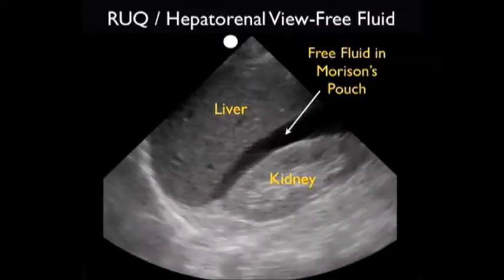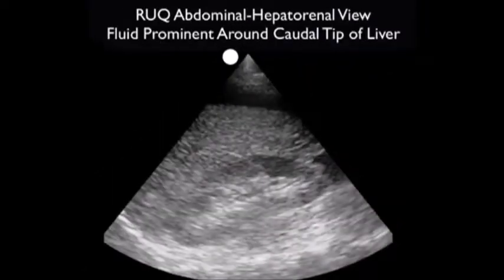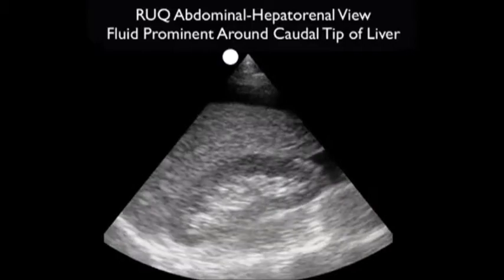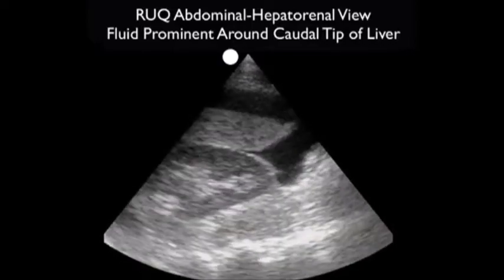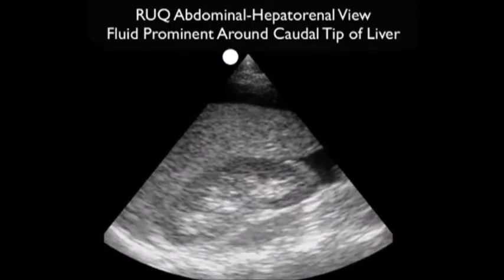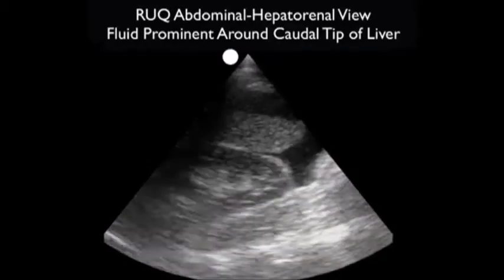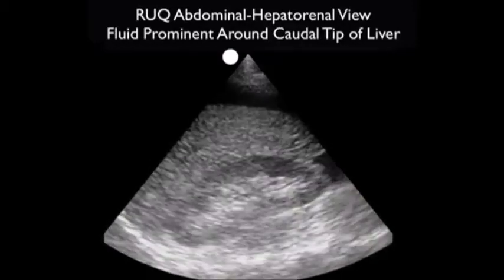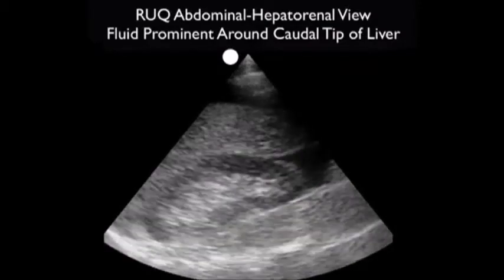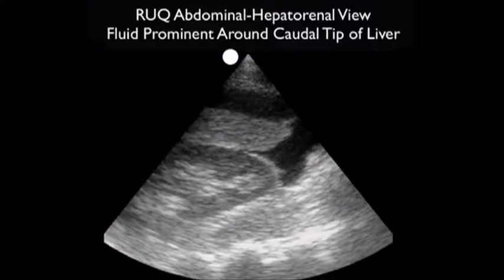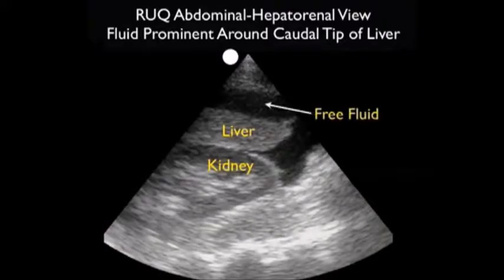Notice that it layers out in between that liver and kidney. To emphasize that a complete right upper quadrant view includes looking at the caudal tip of the liver, let's examine this video clip from another trauma patient. If we look at the hepatorenal interface, we fail to see any fluid, but as we move the probe inferiorly, we see that the caudal tip of the liver is well outlined by fluid — both anterior and posterior to the caudal tip — making this a very important area to examine.